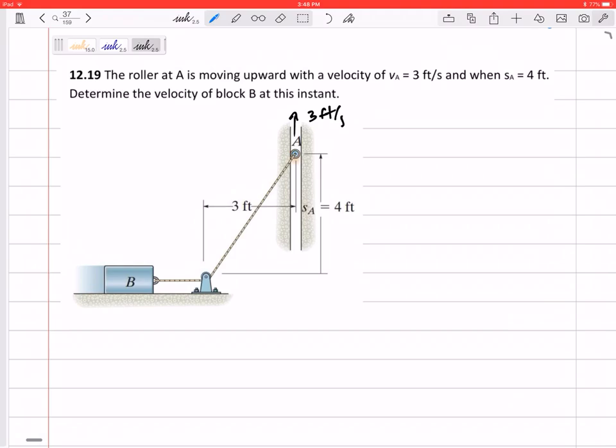This seems like a very simple problem, but I don't know if you can visualize this. This is not simple. The velocity of B is not simply also 3 feet per second. That'd be too easy, but this is a constrained motion problem.